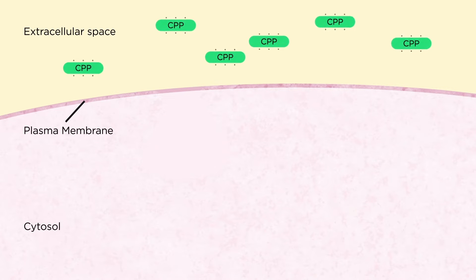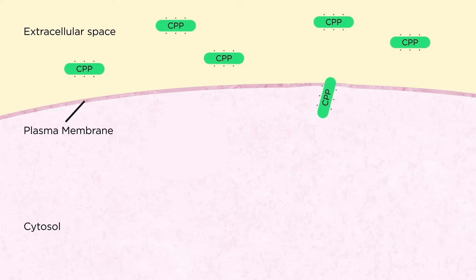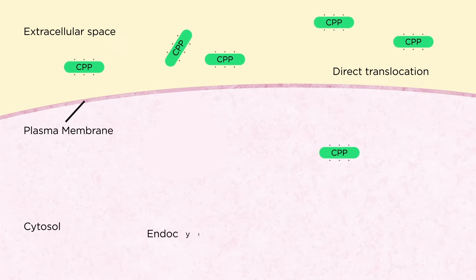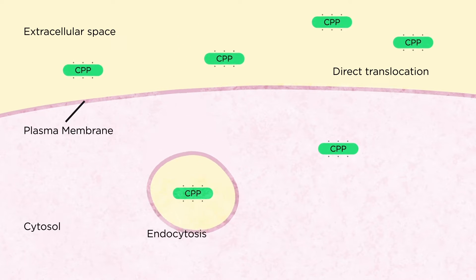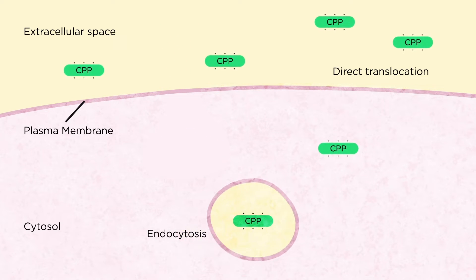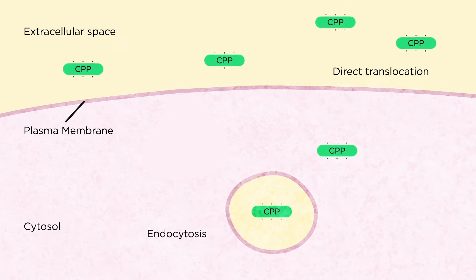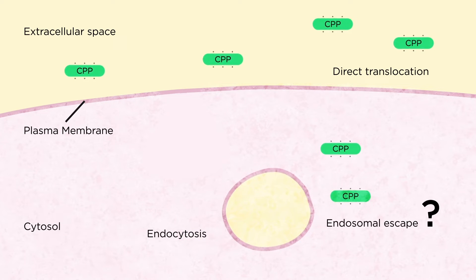But how do CPPs enter cells? They use two ways. They can cross the plasma membrane directly — this is called direct translocation — or they can be engulfed via endocytosis. If CPPs enter cells by endocytosis, they may reach the cytosol by a process called endosomal escape.